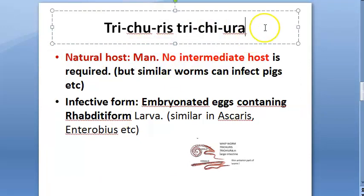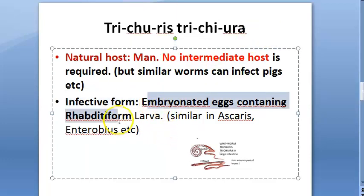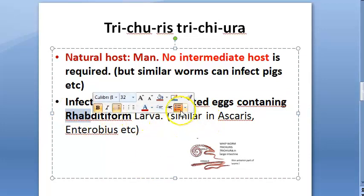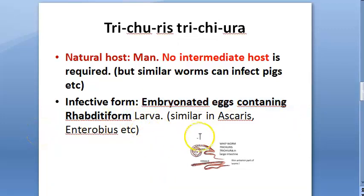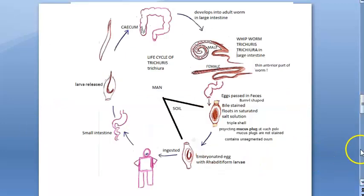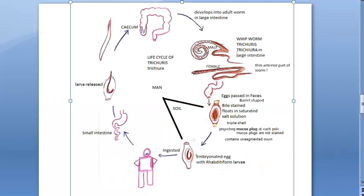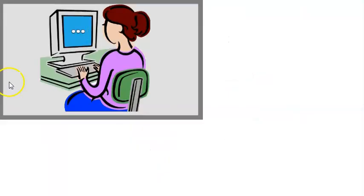Now moving to the life cycle of Trichuris trichiura: the infective form is the embryonated egg containing the rhabditiform larva. Remember to write the spelling correctly in the exam — rhabditiform larva. This same infective form is also seen in Ascaris and Enterobius vermicularis, as all of these are nematodes.